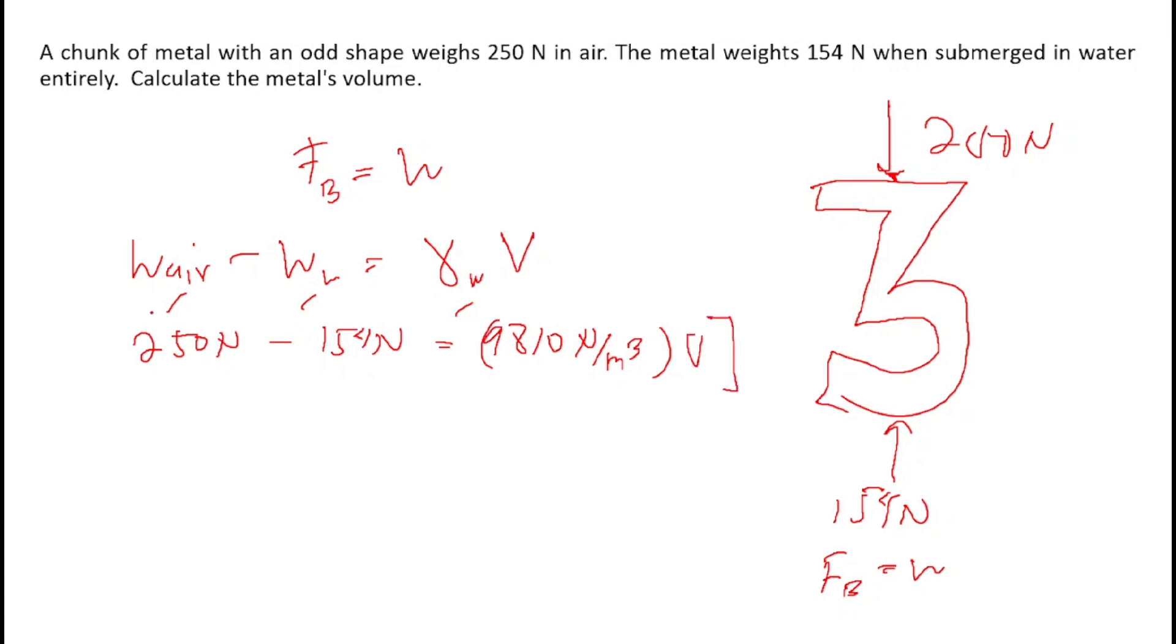To calculate for the volume, we are going to divide this with the specific weight of 1 over 9,810 N per cubic meter. Volume would equal to 0.0979 cubic meters. And this is the answer for this problem.